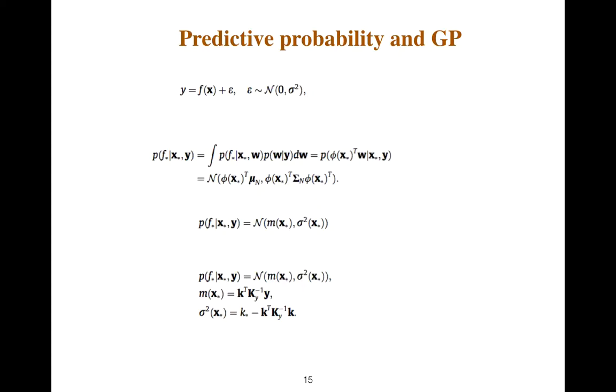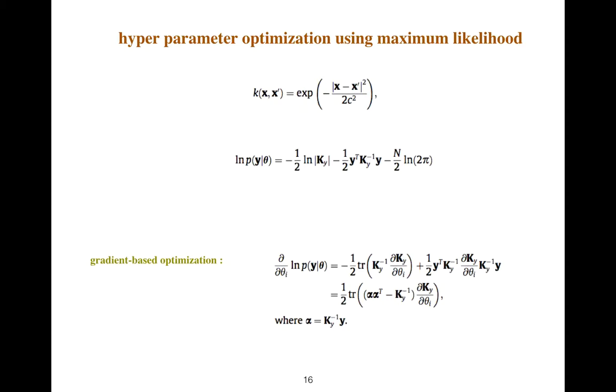But if we add some epsilon due to lack of good modeling of Black-Scholes, for example, then we have the true implied volatility. Hyperparameter optimization using maximum likelihood—you can use gradient-based, for example, to catch the hyperparameters.